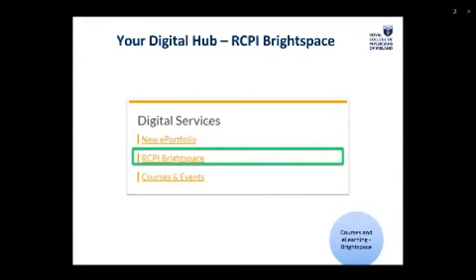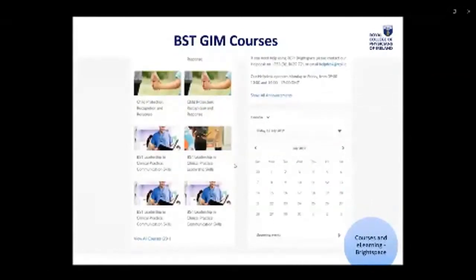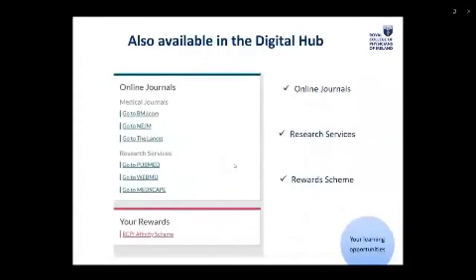Where can you access your courses? On your digital hub when you log into RCPI, you will find the RCPI Brightspace link. Brightspace is our RCPI courses portal — here is where you will find all of your BST mandatory courses as they become available to you. It is a new RCPI virtual learning environment where content for courses both online and offline and study days is available, and where you will find your certificates of attendance. If you have any course-related queries, please email the courses department at courses@rcpi.ie. Also available in your digital hub: access to online journals, research services, and your RCPI affinity scheme, where you will find benefits available to trainees such as discounts on shopping, hotels, dining, and parking.